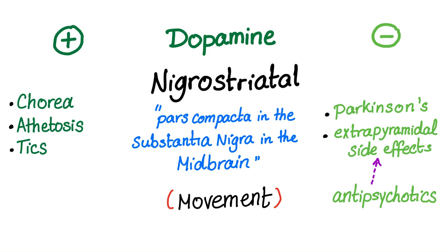The function of dopamine will vary depending on the neural pathway. For instance, the nigrostriatal pathway. The pars compacta of the substantia nigra of the midbrain — this is where dopamine is.